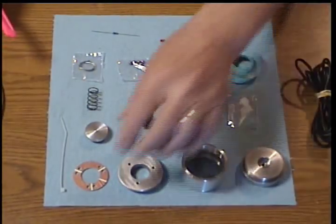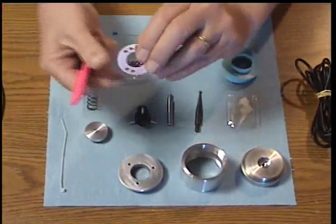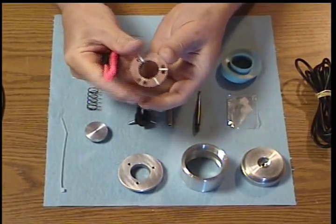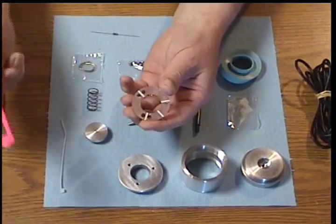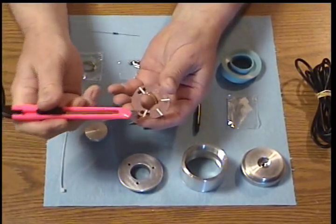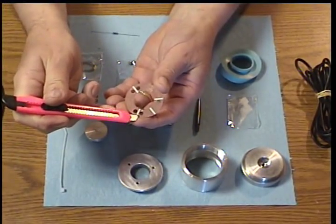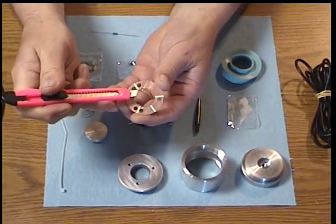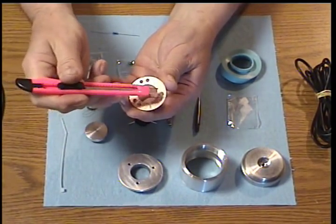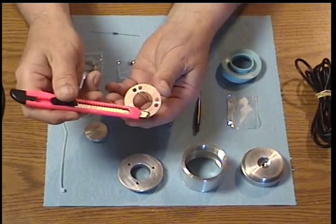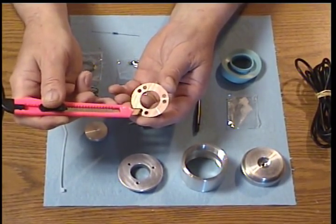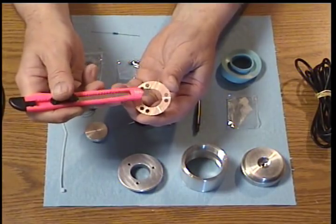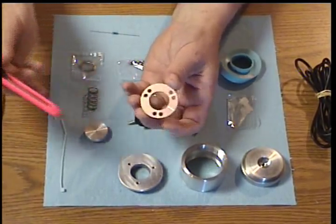The first step in assembling the probe is to carefully examine the printed circuit board. What we're looking for is any little slivers of copper that might short across these four grooves, and any significant burring around the six holes that are in the printed circuit board.